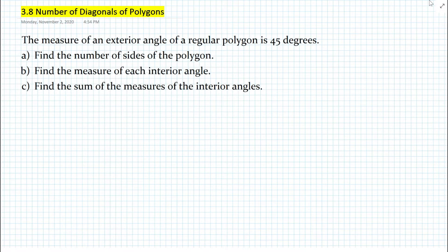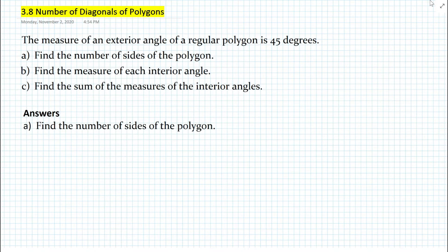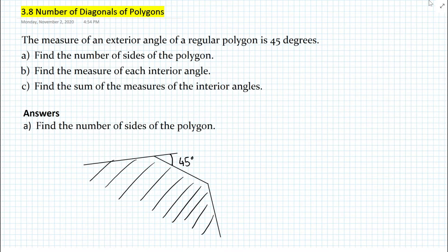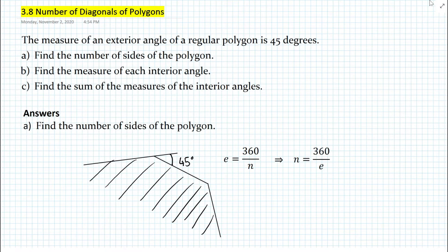Let's get started with part A. To find the number of sides of the polygon, we can look at the exterior angle — and that's the only thing we have: 45 degrees for one of the exterior angles. The relationship is that the exterior angle equals 360 divided by the number of sides, so we rearrange: N equals 360 divided by the exterior angle. Substituting 45, we obtain N equal to 8.